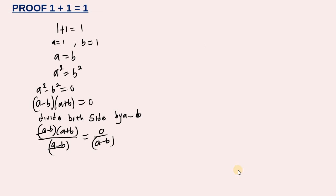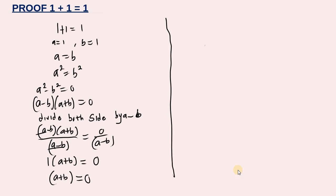So we have one multiplied by a plus b, which is equal to zero. This means a plus b is equal to zero. Since a is 1 and b is 1, that means one plus one is equal to zero.